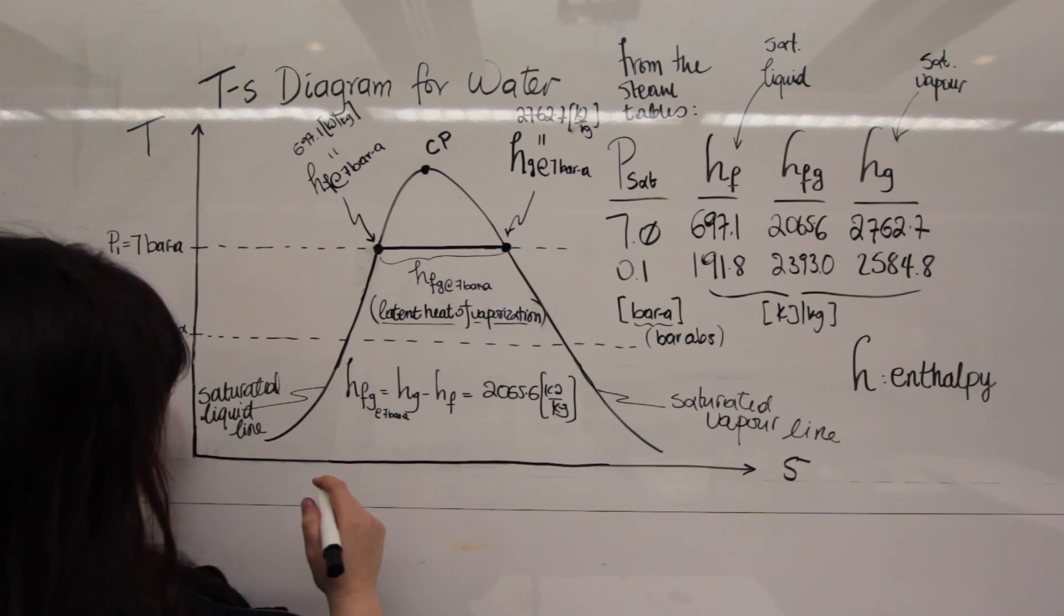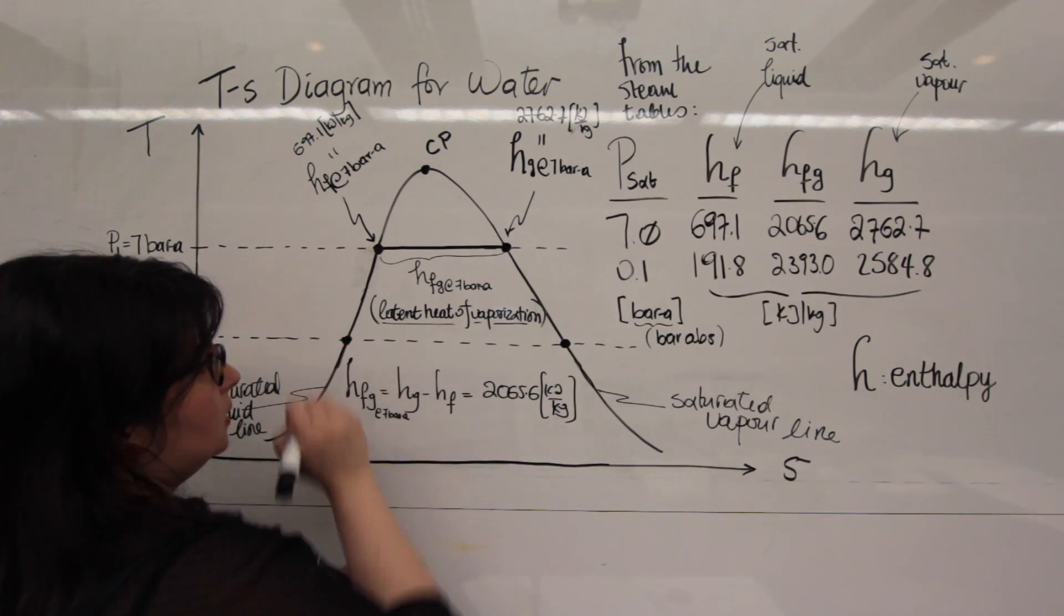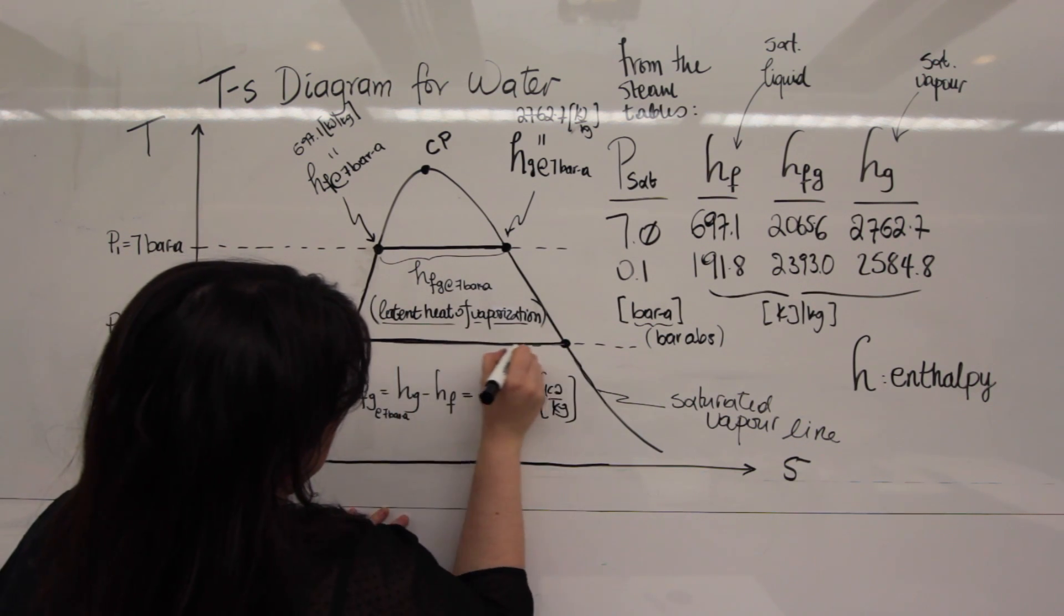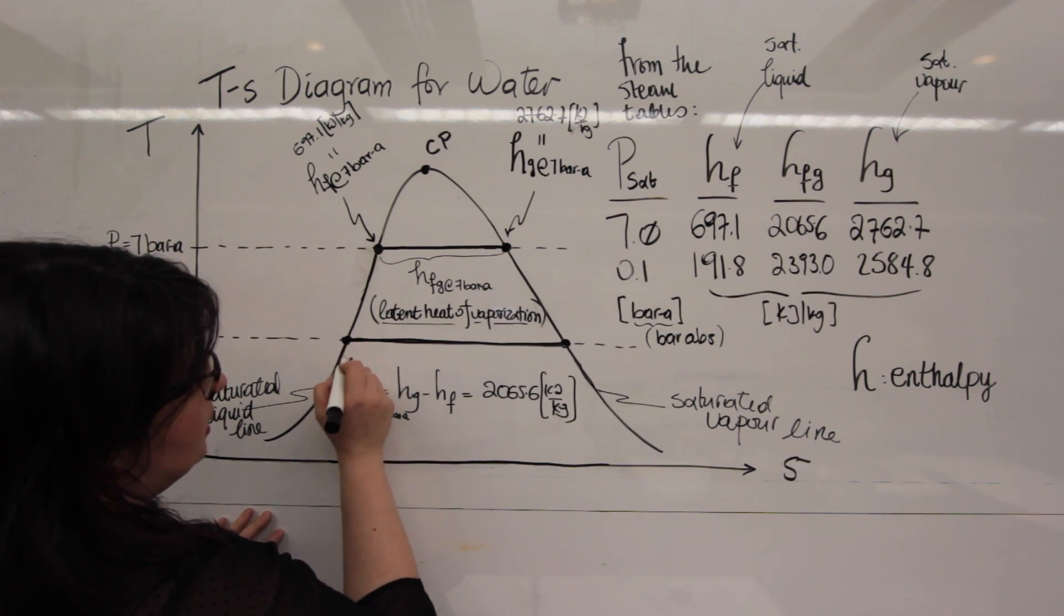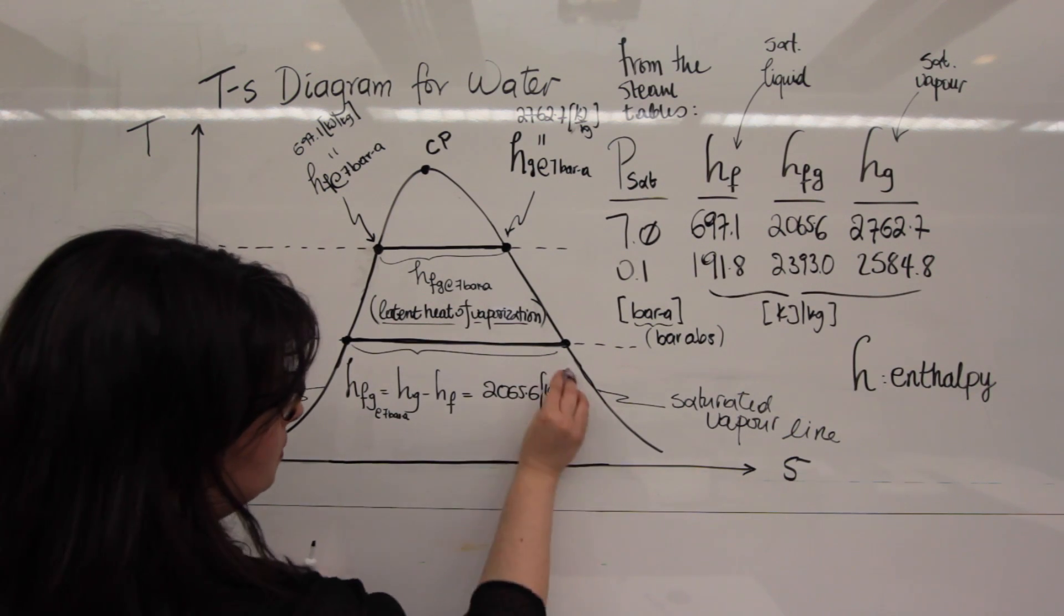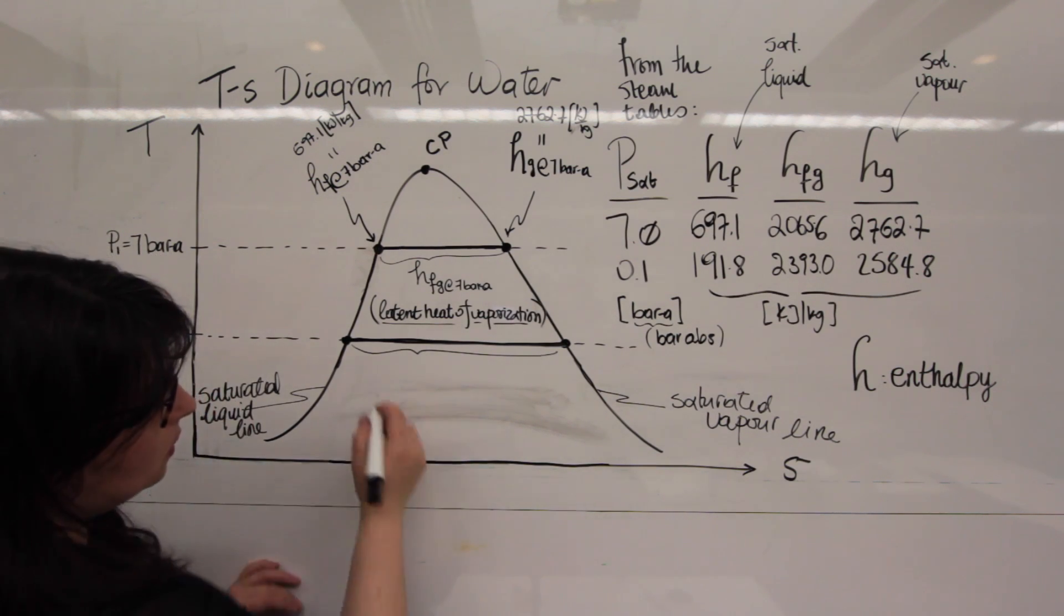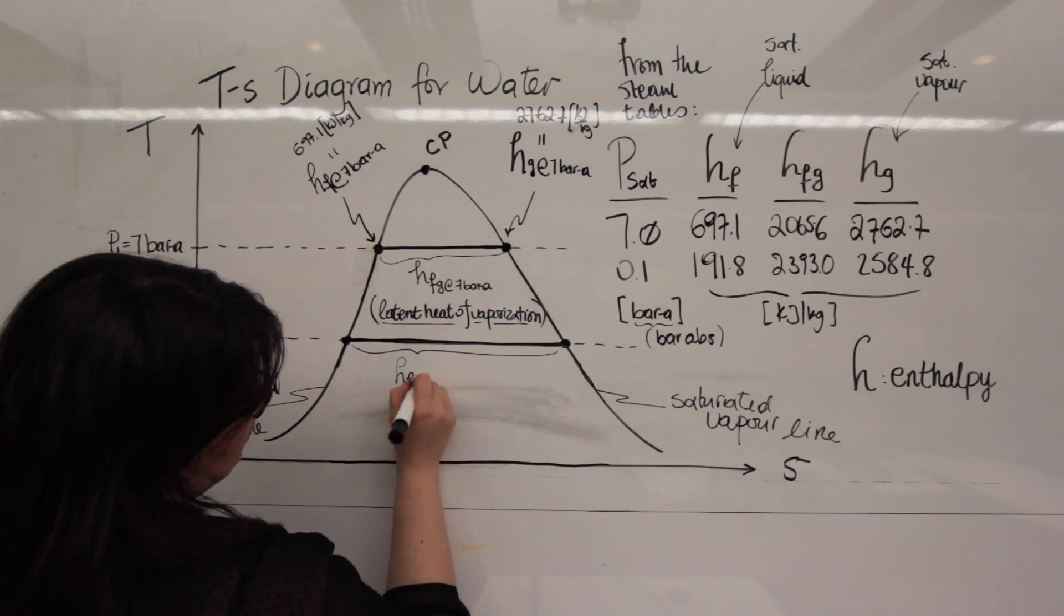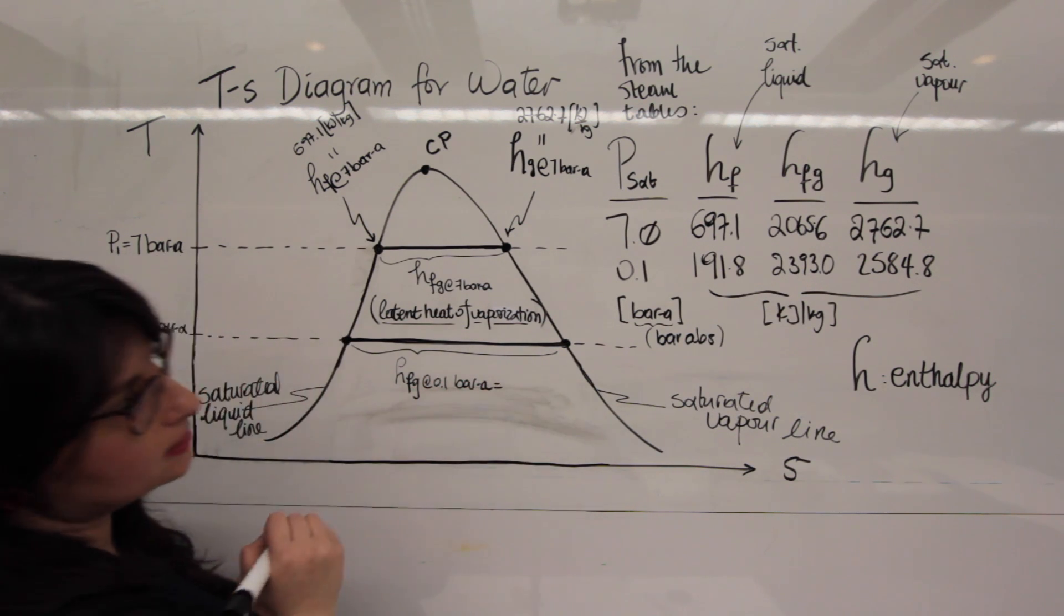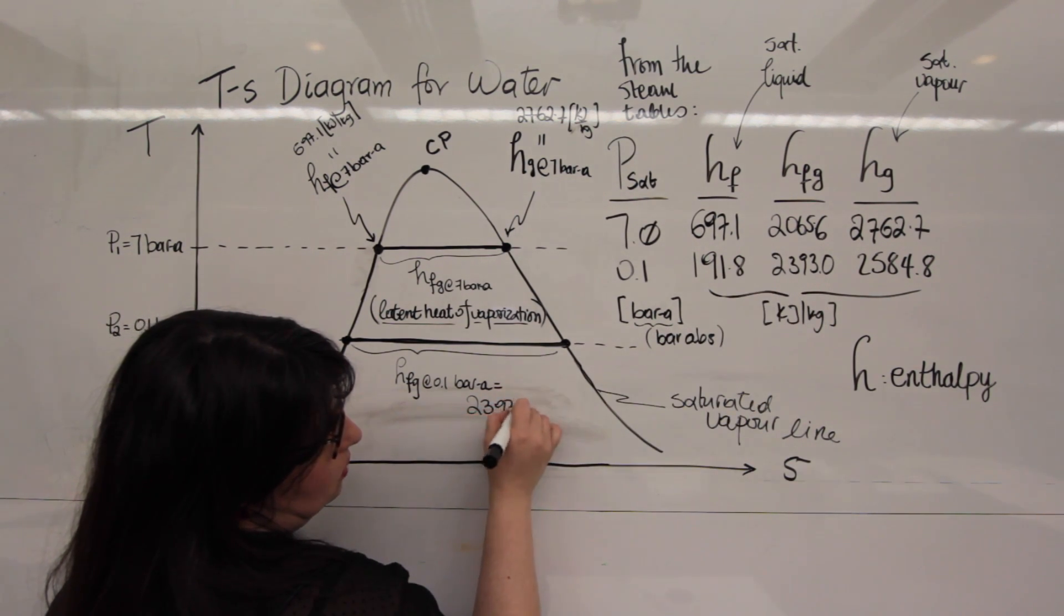Okay, now let's look at the next line, 0.1 bar. I'm going to take this one here and that point there and this line. Let's say this one, I'm going to delete this. This would actually be HFG at 0.1 bar A. How much is that? We have it up here. It's 2393.0.